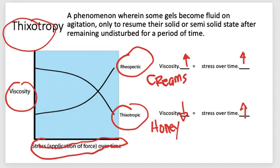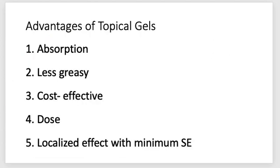Let us remember: thixotropic liquids decrease in viscosity as stress over time increases, while rheopectic liquids increase in viscosity as stress over time increases. For the advantages of topical gels, they avoid gastrointestinal drug absorption difficulties caused by gastrointestinal pH, enzymatic activity, and drug interaction with food and drinks, and can be used to avoid the first-pass effect — the initial pass of the drug substance through systemic and partial circulation following gastrointestinal absorption, avoiding deactivation by digestive and liver enzymes.